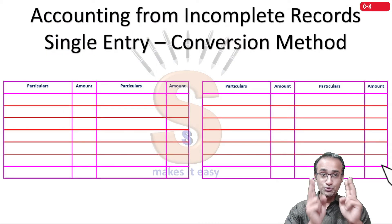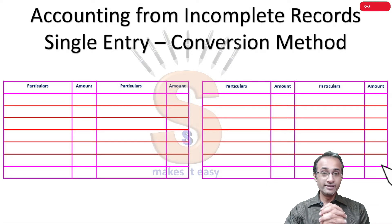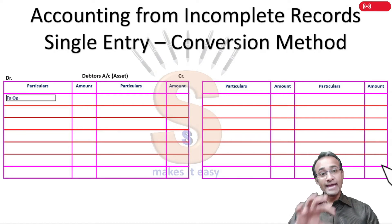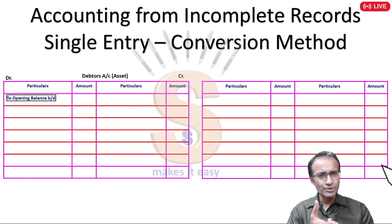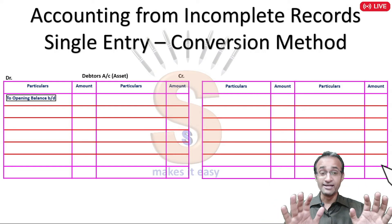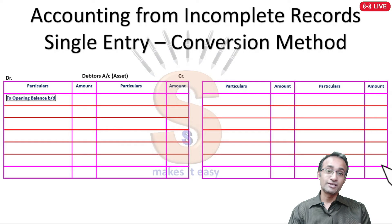The main two accounts of Single Entry that you should be aware of are the debtors account and the creditors account. Single Entry is a chapter where nominal accounts are not made - this is very important. Single Entry is shortcut accounting.